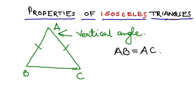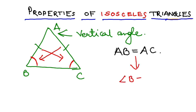AB and AC are the two equal sides. If AB and AC are equal, then their opposite angles are equal. Listen very carefully: if two sides are equal, then their opposite angles are equal. The opposite angle of side AB is angle C, and the opposite angle of side AC is angle B. So if AB is equal to AC, then angle B is equal to angle C.